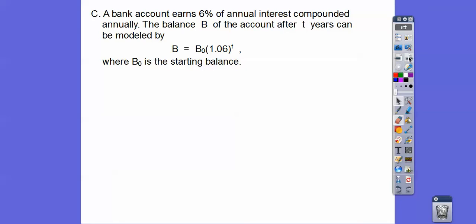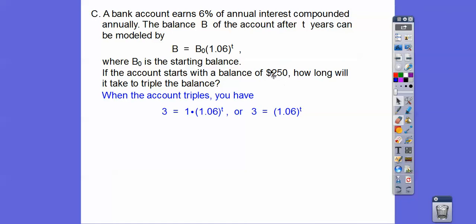A bank account earns 6% annual interest compounded annually. The balance B of the account after two years can be modeled by this, where this is the starting money, this is the ending money. This is 1 plus 6%, the 1 plus r, which is 1.06: 100% plus the 6%. We're going to do some logging on this. If the account starts at a balance of 250, how long will it take to triple the balance? If it triples, it's going to be three times as much. You can have any number here; you're always going to end up with this function.